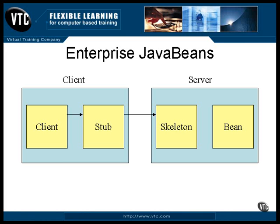The skeleton then unmarshals the arguments into a local form and calls the actual method of the Bean. This method can call other methods in the same object or in different objects. It can talk to a database. It can do anything any Java program can do, including call methods in other Beans. Eventually, the method will return to the skeleton. The skeleton marshals the return value to be passed back across the communications link and sends the response back to the stub. The stub unmarshals the return value into a local form and uses it as a return value to the client. As far as the client is concerned, a standard Java method call has just returned with a local value. The good part is that you don't have to write all of this code. You'll have to put together a couple of descriptive things, but they're really quite simple and take a standard form. From this information, the stub and the skeleton are created.